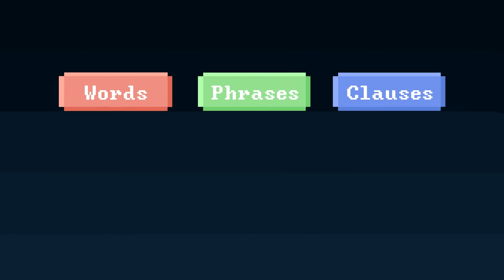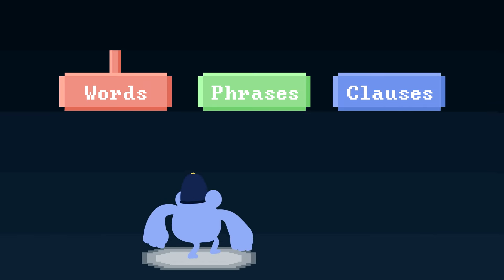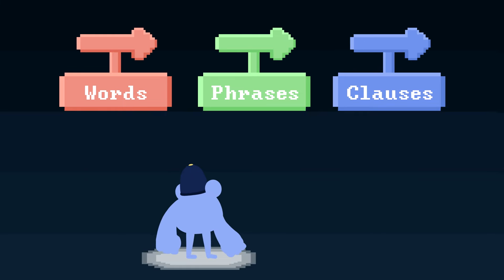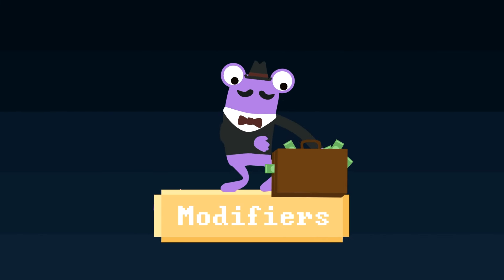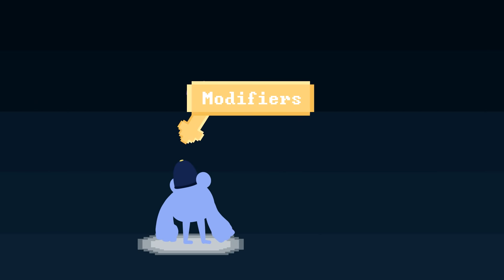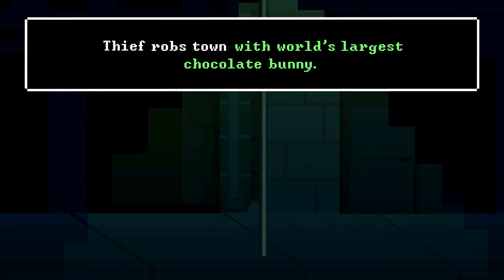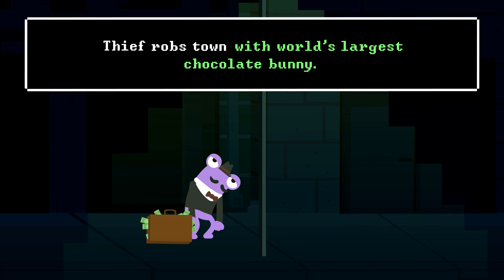Modifiers are words, phrases, and clauses that add information about other parts of a sentence, which is usually helpful. But when modifiers aren't linked clearly enough to the words they're actually referring to, they can create unintentional ambiguity. That happens because the modifying words — in this case, 'with world's largest chocolate bunny' — modify the wrong thing: the robber's actions instead of the town.